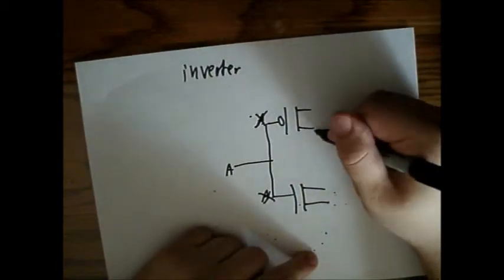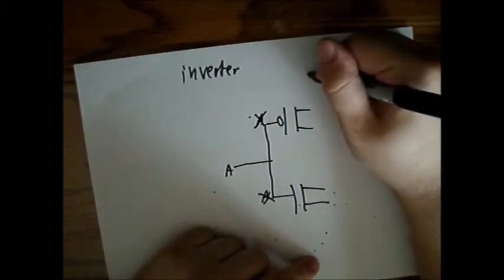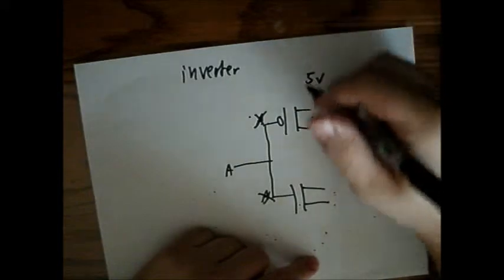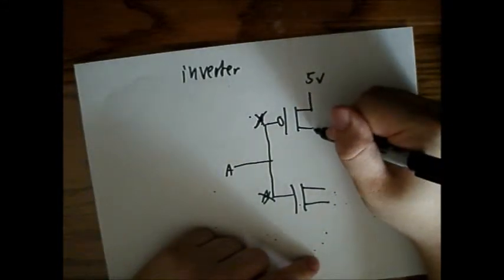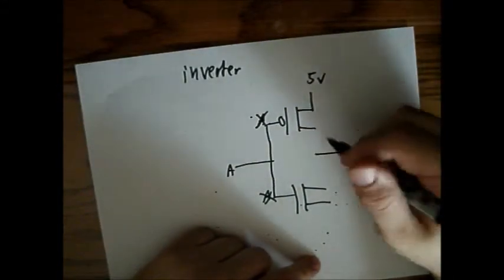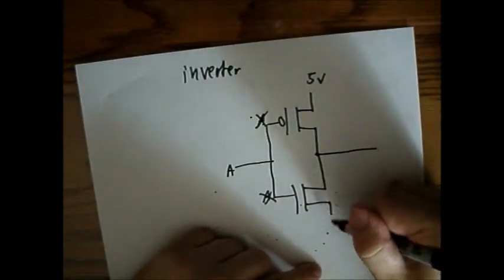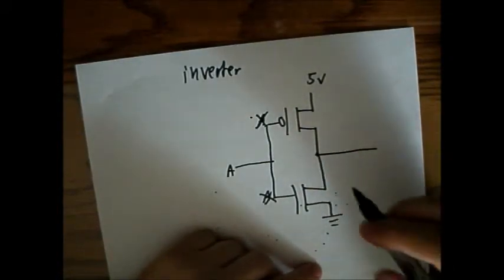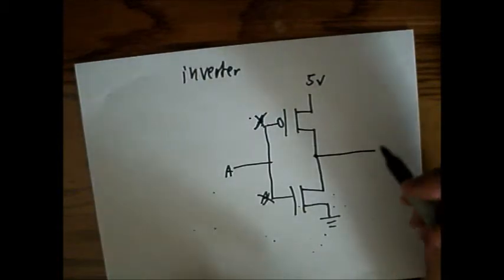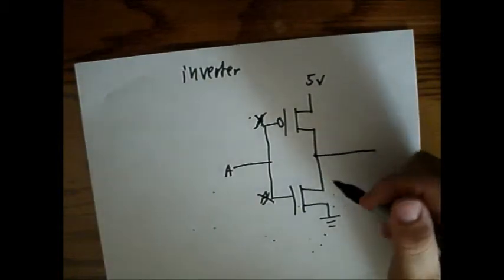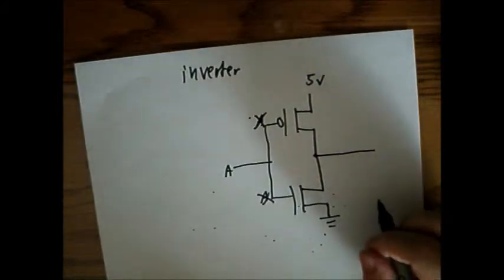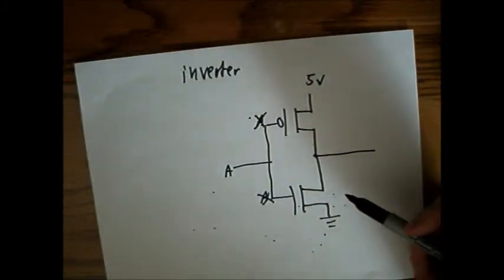You're going to want to daisy chain these. We'll start with the 5 volts here, and then we'll have our output line here. Connect these two together, and this will be our ground. I'll prove to you that this actually works as a basic inverter, your most fundamental inverter logic gate.